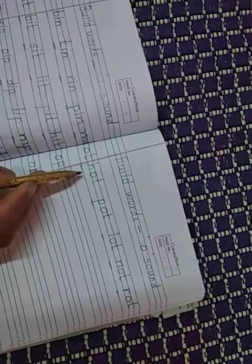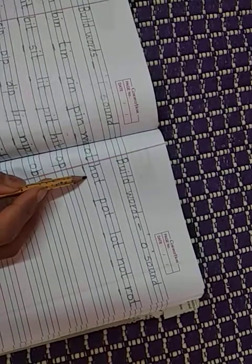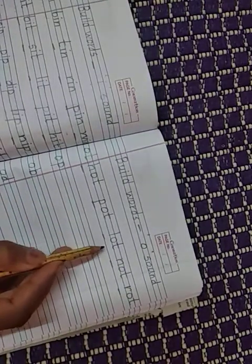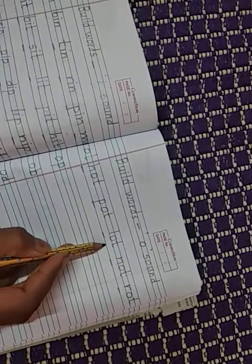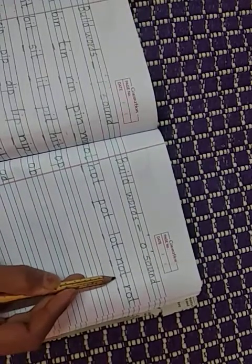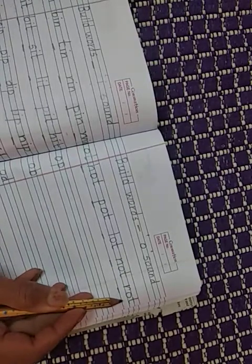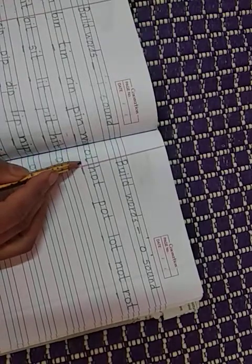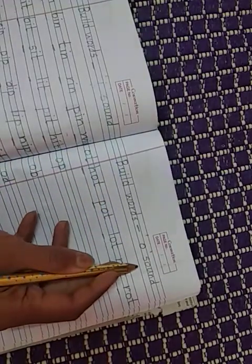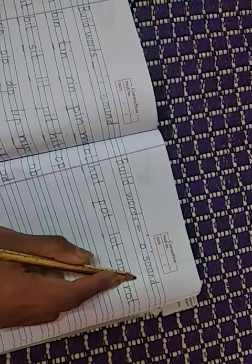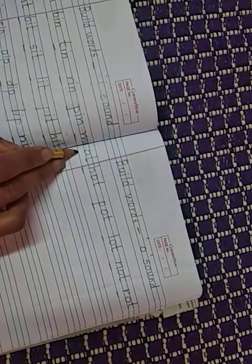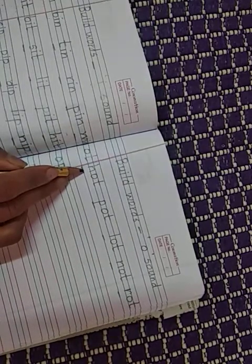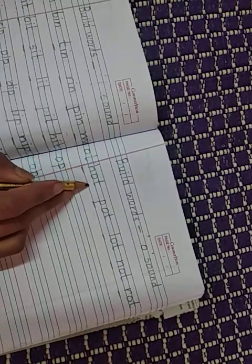We will see here now. Hot. Repeat hot. Repeat pot. Pot. Lot. Lot. Not. Not. Rot. Rot. Now see here. OT words. Build words of O sound. OT words. We have formed OT words. Any alphabet you can take except vowels. You can take here and form new word.